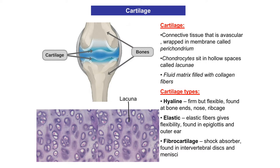There are three primary types of cartilage: hyaline, elastic, and fibrocartilage. Hyaline is firm but flexible and is found at bone ends, the nose, and the rib cage. Elastic cartilage moves freely, as its name suggests, and is found at the outer ear (the helix) and the epiglottis, which assists in swallowing. Fibrocartilage acts as shock absorbers and is found in the intervertebral discs of the spinal column and the menisci of the knee.